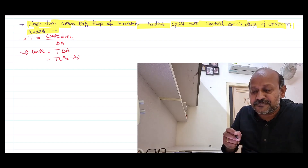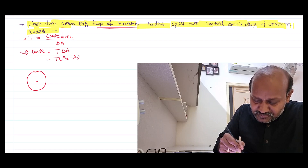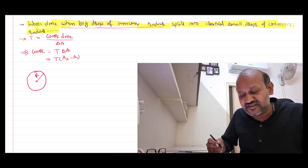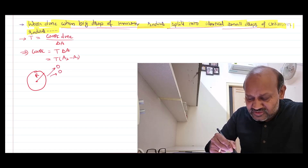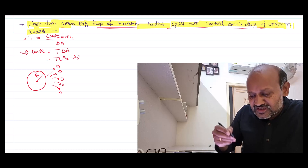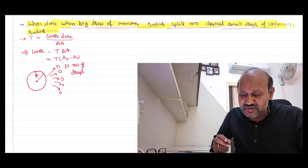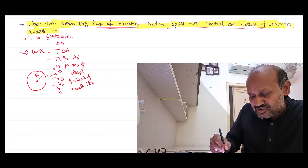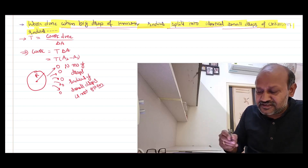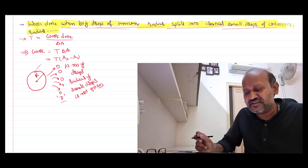Let's proceed and see what the problem is saying. When a big drop of known radius — imagine a spherical water drop — its radius is known. It splits into identical small drops. But the radius of the small drops is not known; it was not given.